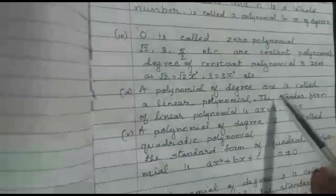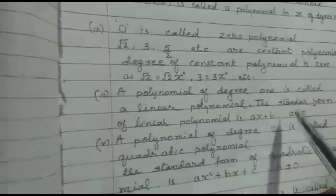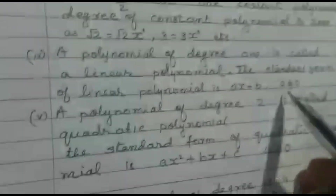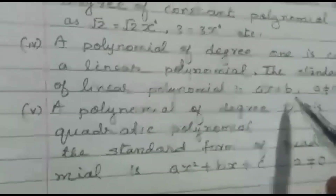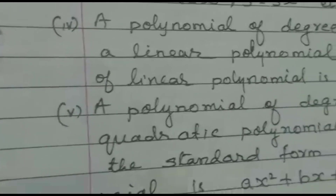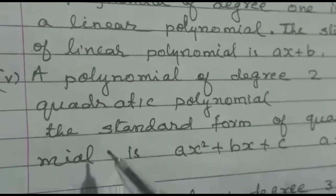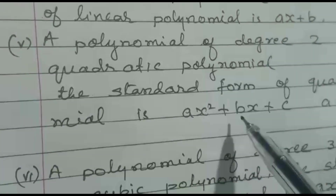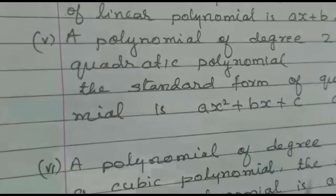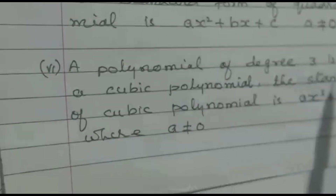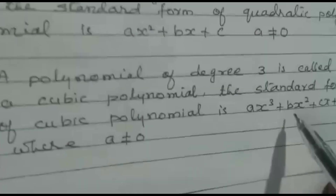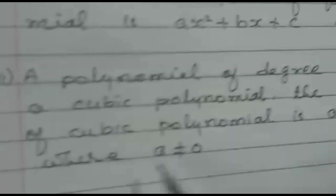A polynomial of degree 1 is called a linear polynomial, where a ≠ 0 (b can be 0, but a cannot be 0), and a and b are real numbers. A polynomial of degree 2 is called a quadratic polynomial; its standard form is ax² + bx + c, where a ≠ 0 and b and c can be 0. A polynomial of degree 3 is called a cubic polynomial; its standard form is ax³ + bx² + cx + d, where a ≠ 0.